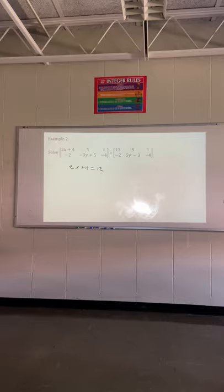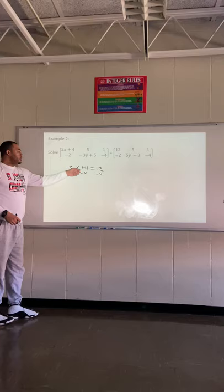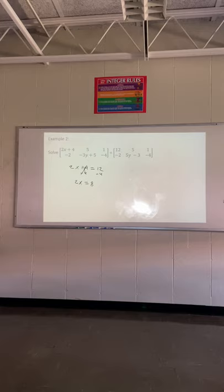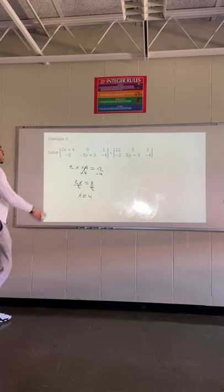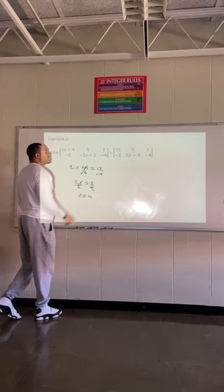All we're doing is solving for variables. In order to get x by itself, I need to subtract 4 from both sides — these will cancel out — so I'm left with 2x = 8. To get x by itself, I divide by 2, which means x = 4. So 2 times 4 is 8, plus 4 is 12, confirming this entry equals that entry.